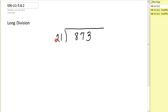When you are trying to divide 21 into 873, you have to figure out where the answer will be. Well, does 21 go into 8? No. Does 21 go into 87? Yes. That means that your answer will begin above the 7, and there may or may not be a remainder.